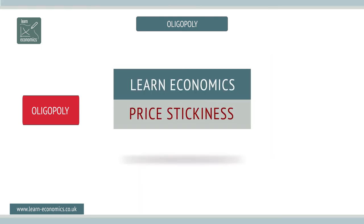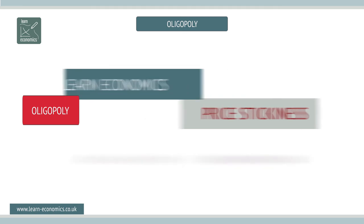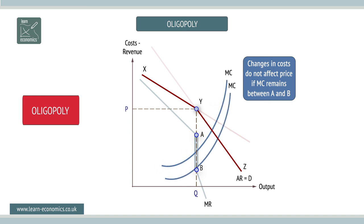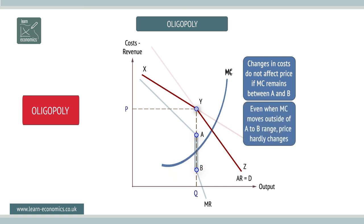Price stickiness. The so-called kinked demand curve helps explain the phenomenon of price stickiness. Once set, the price sticks at P. Changes in costs do not affect price if MC remains between A and B. Even when MC moves outside this range, price tends to remain sticky.